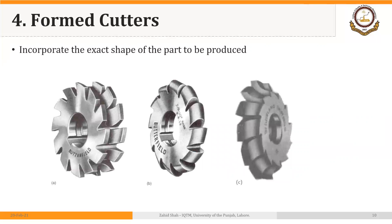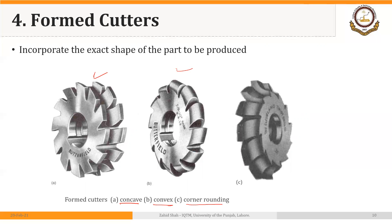Then we have form cutters. When using these cutters, the shape achieved in the final part depends upon the shape of the cutter. If you want to make a convex shape, you will use a concave cutter. If you want to make a sharp edge round — to produce a certain radius on the edge — then we use a corner rounding cutter. A concave shape cutter will make a convex radius onto the workpiece, and a convex cutter will make a certain concave shape onto the workpiece. The corner rounding cutter produces a radius onto the edge of the workpiece.